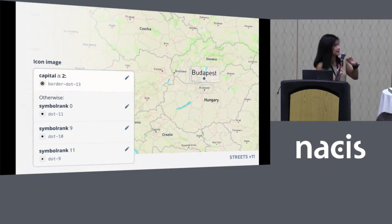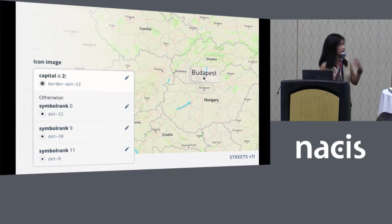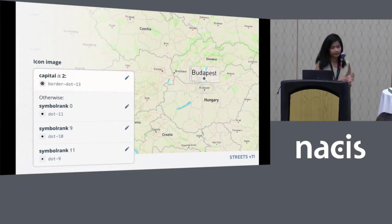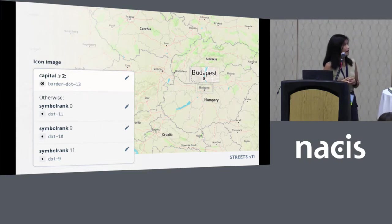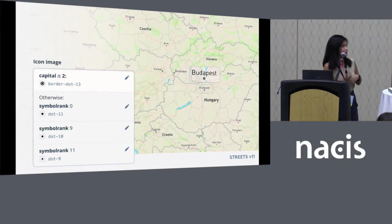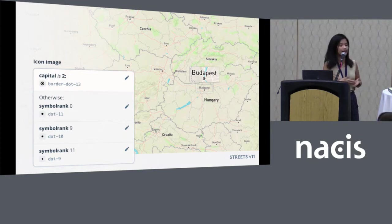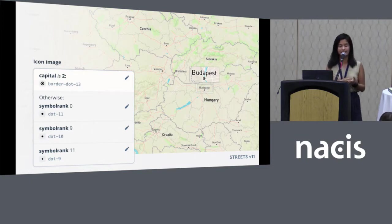These particular data fields are coming from the new Mapbox Streets v8 tileset. It's been a collaboration with our data teams to create a data layer that is ready and optimized to be styled.